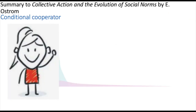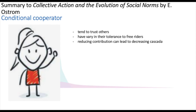The second type is the conditional cooperator — an individual who is willing to initiate cooperative actions when they estimate others will contribute, and to repeat these actions as long as a sufficient proportion of others are also contributing. Conditional cooperators are a source of relatively high contribution levels in initial rounds. They tend to trust others but vary in their tolerance for free-riding; some are easily disappointed if others do not contribute and begin to reduce their own contributions, which can lead to a cascading decrease as everyone stops trusting each other.